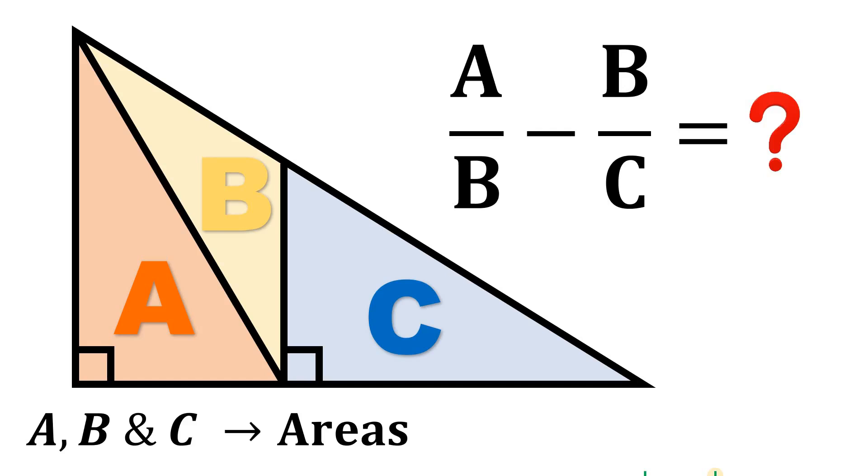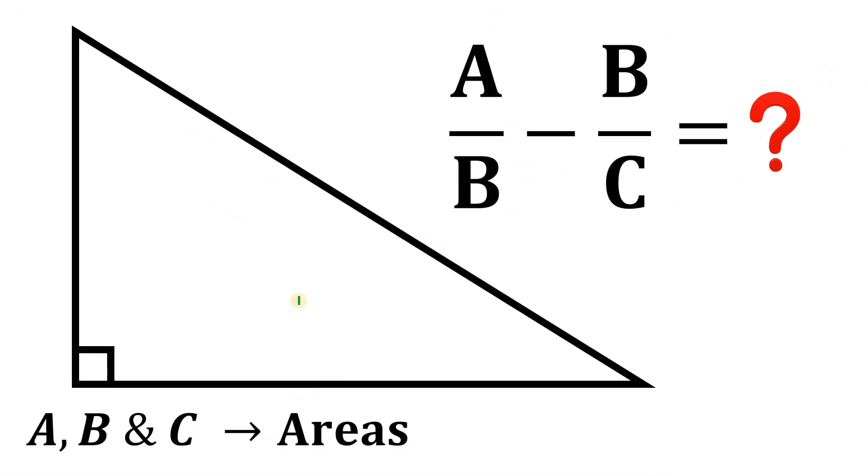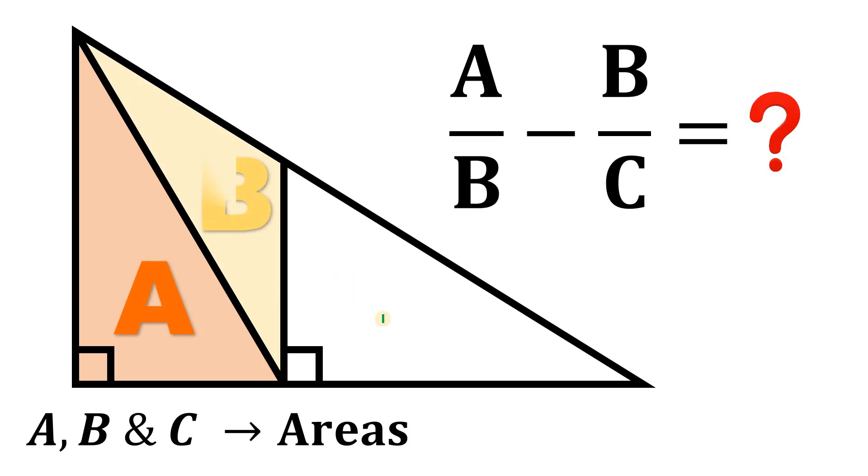Can you solve this geometry challenge? Here's the question. Given this right triangle, now let's draw a perpendicular line like this and let's connect these two points like this. Now this triangle, let's have the area denoted as A and the area of this triangle denoted as B and the area of this last triangle simply equal to C.